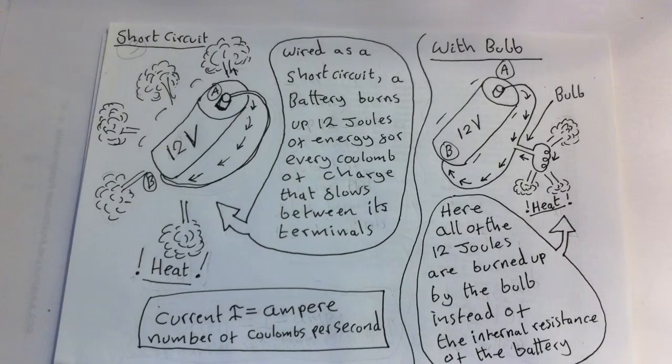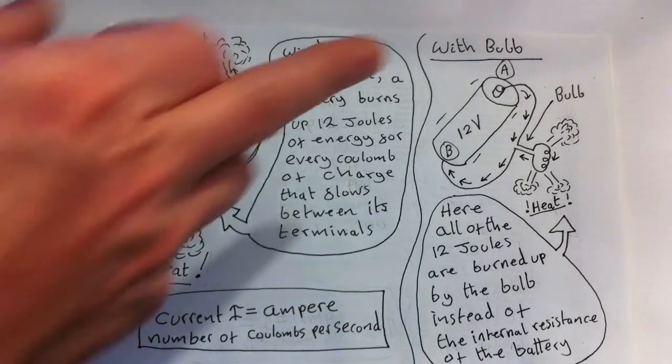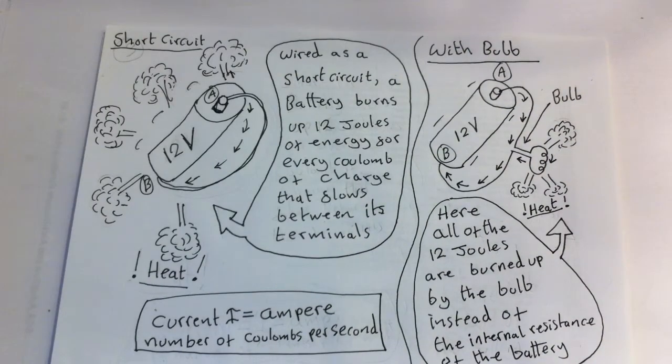Now, let's connect a wire between the terminals of this 12-volt battery, but this time with a light bulb. So, here we're going to use a light bulb. So, instead of shorting the battery, the light bulb will now convert the 12 joules of energy directly into heat for every coulomb that passes through the bulb.